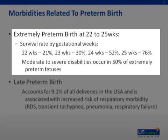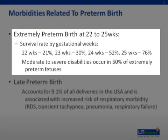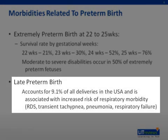Extremely preterm birth is defined as birth between 22 and 25 weeks. Most neonatal intensive care units provide intensive care routinely at 24 weeks. Moderate to severe disabilities occur in 50% of extremely preterm fetuses. Survival at 22 weeks is about 21%, at 23 weeks it is about 30%, at 24 weeks 52%, and at 25 weeks 76%. Late preterm birth between 34 and 36 weeks of gestation accounts for 9.1% of all deliveries in the United States, and is associated with an increased risk of respiratory morbidity, namely RDS, transient tachypnea of the newborn, pneumonia, and respiratory failure.